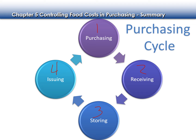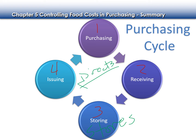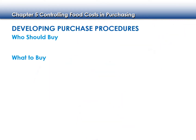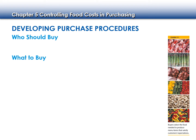We have two different types of products. One is called directs and one is called stores. Directs go from receiving directly into production, and stores go from receiving into storage. Things like dairy products, baked goods, and highly perishable items are going to go directly into production from our receiving dock into the kitchens, whereas canned goods or frozen goods are going to go into our storage.